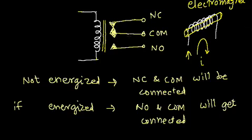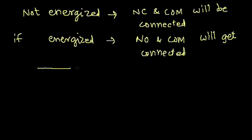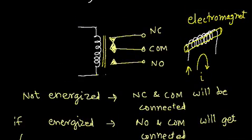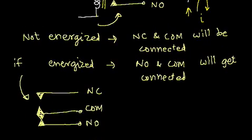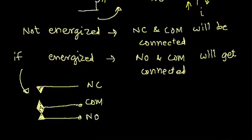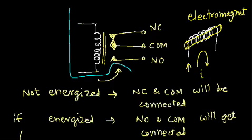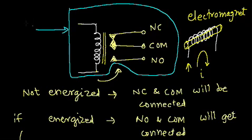When it is energized this is the condition. I have shown the condition with not energized and if it is energized the connections will become somewhat like this — common, normally open, normally closed. It is a kind of switch controlled through electric current. This is the symbol of the relay.